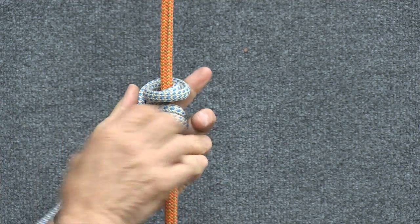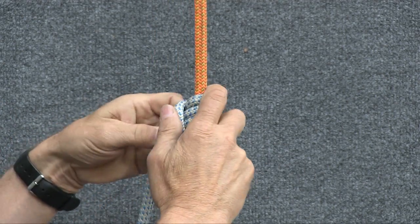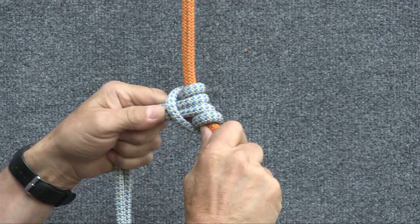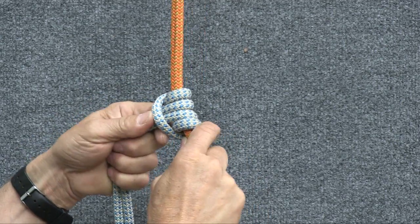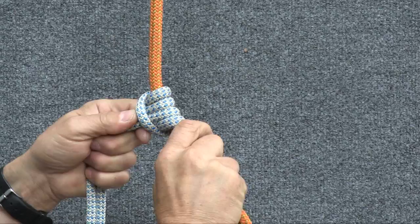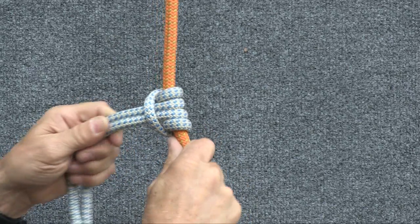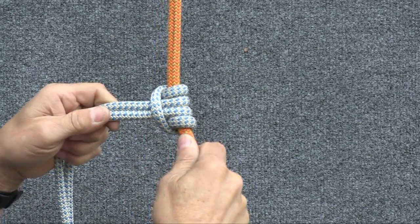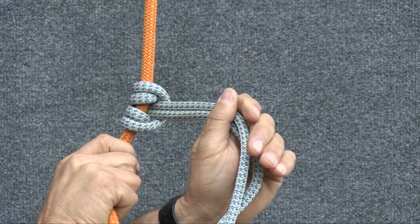When you pull all that tight, it gives you a knot that looks like that. All your strands are laying parallel with each other and nothing is crossing. It looks like that on this side and like that on the back side.